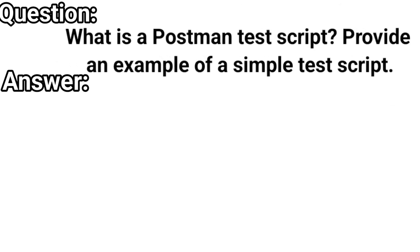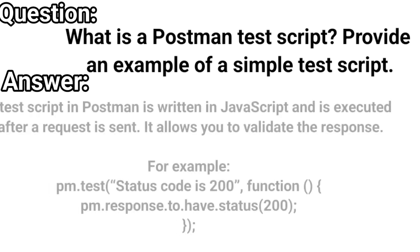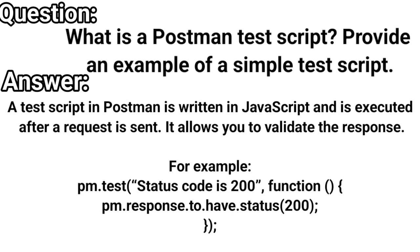What is a Postman test script? Can you also provide an example of a simple one? A test script in Postman is written in JavaScript and is executed after the request is sent. It allows you to validate the response. For example: pm.test('status code is 200', function() { pm.response.to.have.status(200); }). Here pm stands for Postman, and this test checks that the response status is 200.